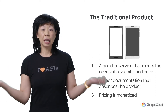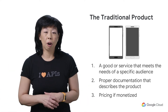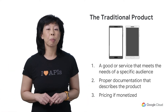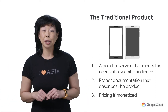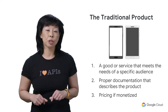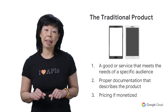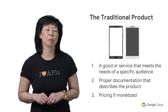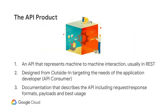The key components here are: one, a description of the product designed with the consumer in mind; number two, documentation on its use; and number three, pricing information. The same concepts applied to the traditional product also apply to the API product.